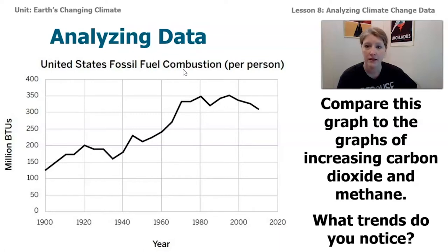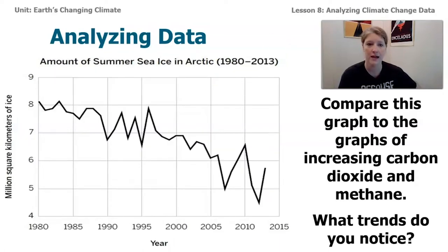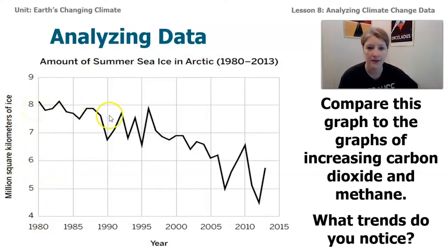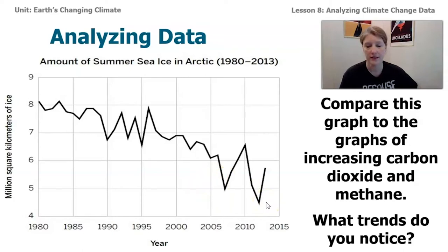That's only one country, so we want to look at more data. This global graph shows all of the ice in the Arctic — more than just the United States. We can see million square kilometers of ice since about 1980, and there's a clear decrease in the amount of sea ice since that time. So while carbon dioxide and methane are increasing in our atmosphere, the amount of sea ice on Earth is going down.